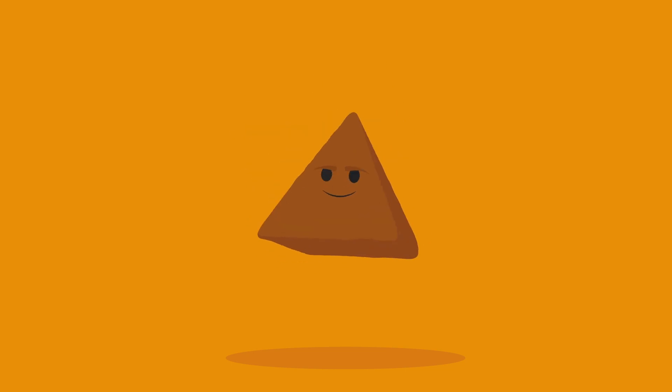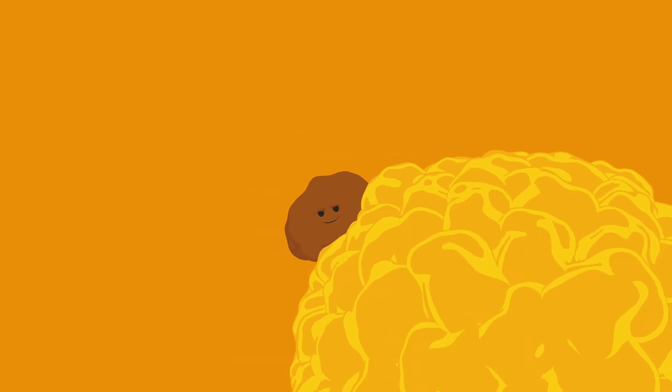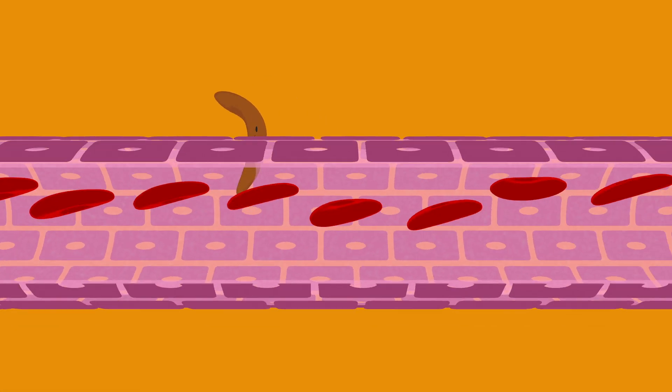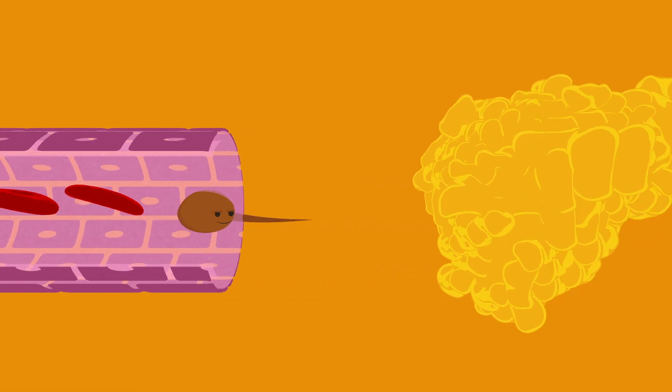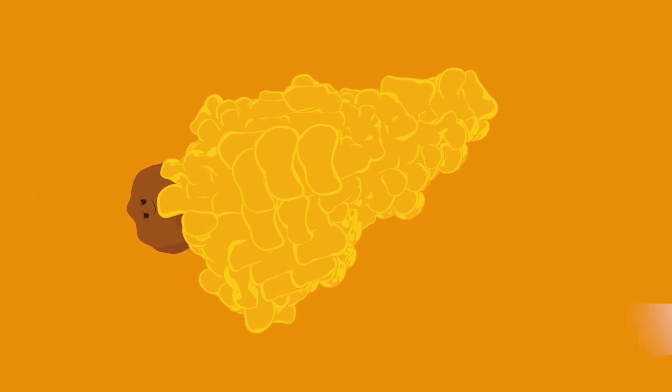Cancer cells are shape-shifters. They can become fat and stocky to make themselves comfortable in different organs, or they can become long and thin to squeeze into blood vessels and travel to new locations, like bones, lungs or the liver.